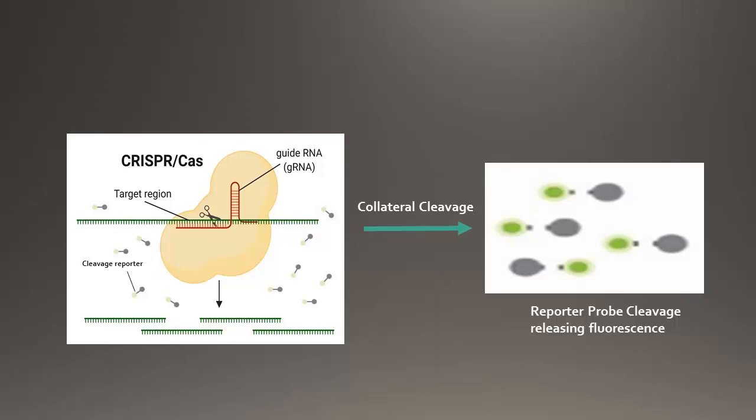The Cas protein, along with the guide RNA, searches for a match in the sample of interest. Once the sequence match is found, the Cas protein gets activated and cleaves the DNA or RNA.